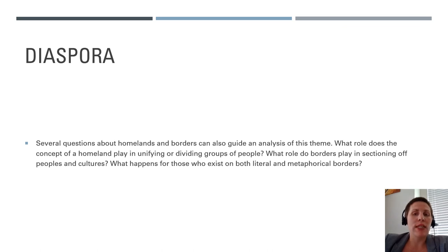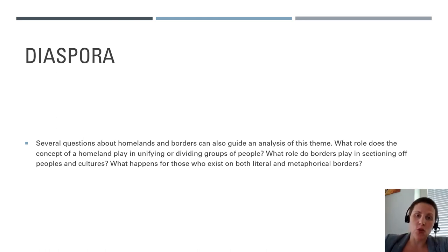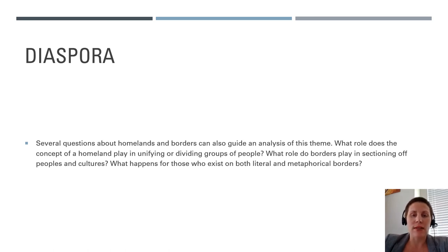Analyzing diaspora involves picking apart the various causes of movement or displacement as well as exploring its effects. It can mean investigating the concept of assimilation — why and how people assimilate, what the choice represents, or to what extent it's a choice at all. This theme relates strongly to identity and hybridity, since a main question is how people do or do not maintain their cultural practices and identities from home while in a new place. People may embrace a new culture, reject it, merge the two, or any combination. What role does the concept of a homeland play in unifying or dividing groups of people, and what role do borders play in sectioning off peoples and cultures?